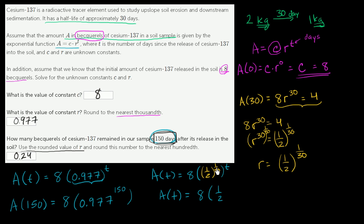If we raise something to an exponent and then raise that to an exponent, we can take the product of those exponents. So that's 1 half to the t over 30 power. That's 8 times 1 half to the t over 30 power. This is another way to describe A of t.